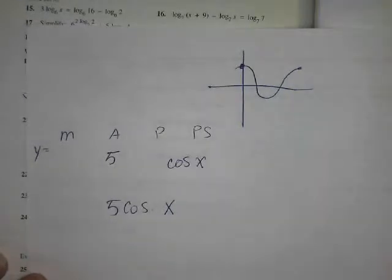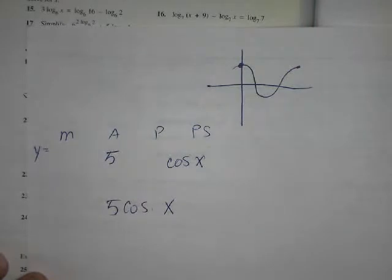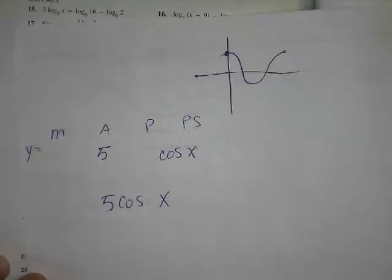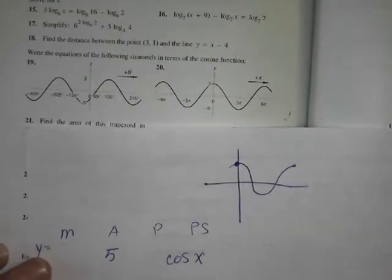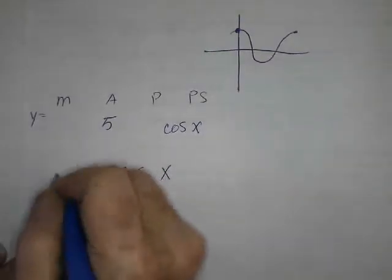And so what does that make the midline be? If that's 2, and you subtract 5? I'm getting negative 3. And if you look from the bottom, and it's negative 8, and you go up by 5, that'll get you there too. That's negative 3.